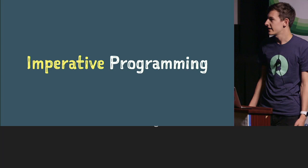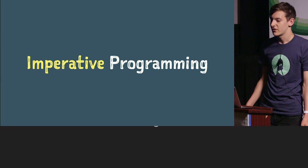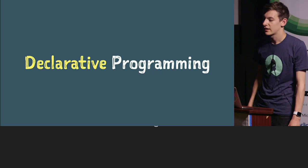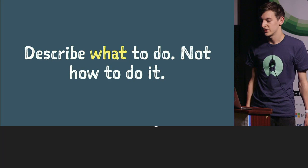Traditionally we've done imperative programming. This is quite common in Objective-C. It's where we tell the machine how to do something — as a result, what we want to do will happen. We describe how to achieve our goals. In contrast, declarative programming is telling the machine what we would like to happen, and we let the computer figure out how it can go about that. We describe what to do, not how to do it.